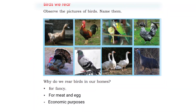The second reason is for meat and eggs — for example, chicken and duck. The third reason is for economic purposes — birds can provide income and economic benefits.